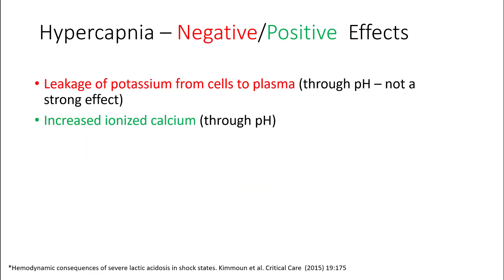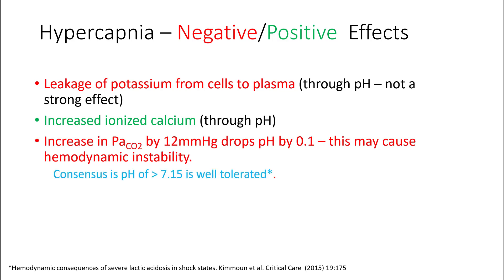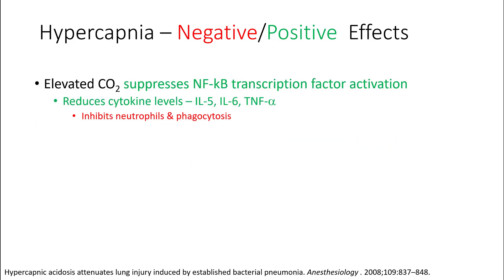Hypercapnia causes acidosis, which results in leakage of potassium from cells to plasma, and it can also increase ionized calcium. Increasing PaCO2 by 12 millimeters of mercury drops the pH by 0.1. Lower pHs less than 7.1 may cause hemodynamic instability. Consensus is that pH of more than 7.15 is well tolerated. Elevated CO2 also acts as mild immunosuppression. It inhibits neutrophils and phagocytosis. It also reduces cytokine levels.